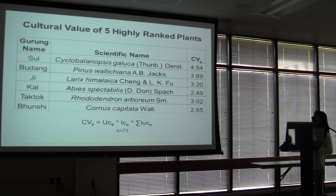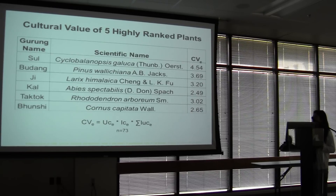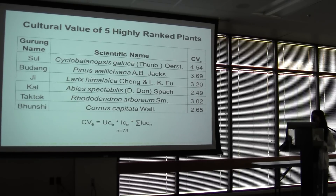This is the cultural value calculation, where you can see that none of the species with high importance values in the ecological setting appear here — again, except for rhododendron. The cultural value was calculated using Reyes and Garcia's 2006 paper published in Economic Botany.